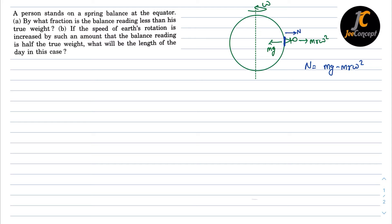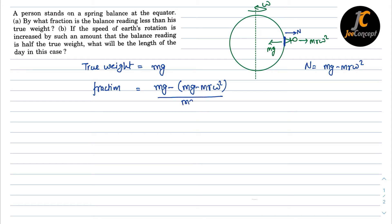To get the fraction by which the reading is less than the true weight: true weight is mg. So the fraction equals (true weight minus apparent weight) divided by true weight, which is (mg minus mr·ω²) divided by mg. The mg cancels out, giving mr·ω² upon mg, and then m cancels, leaving r·ω² upon g.